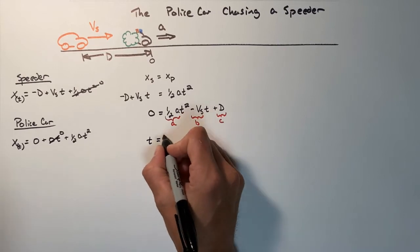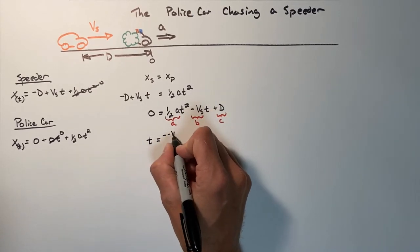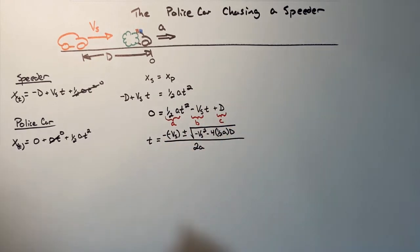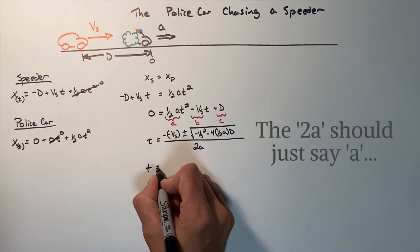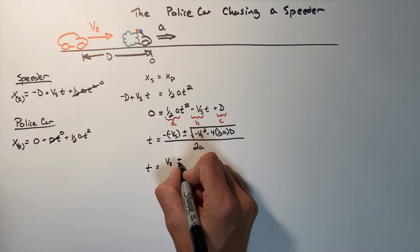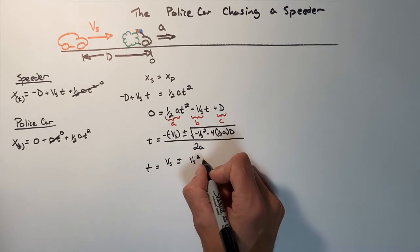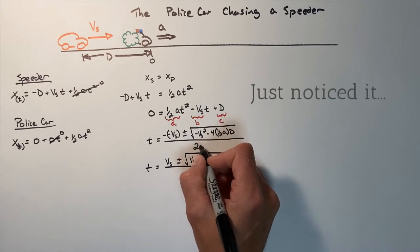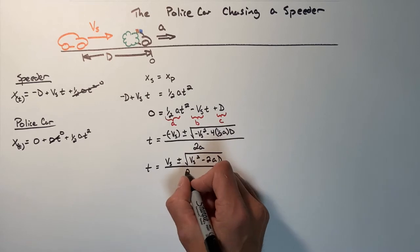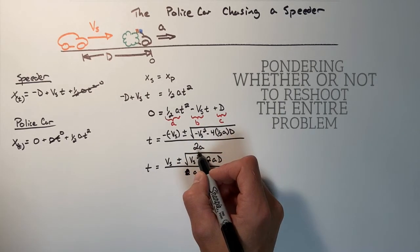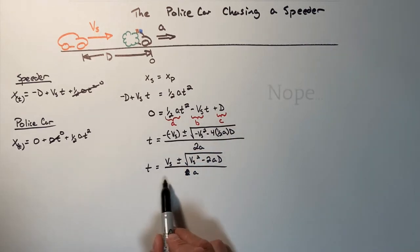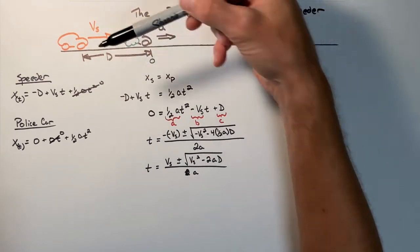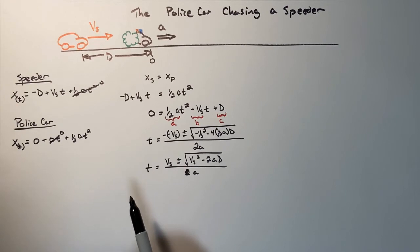We write out the quadratic equation, substituting in the necessary terms, and clean up the result. Now we have a function for time — if we know the velocity, the acceleration, and the distance between the two vehicles, we can solve for the time. But there's a catch: the quadratic equation always yields two results.